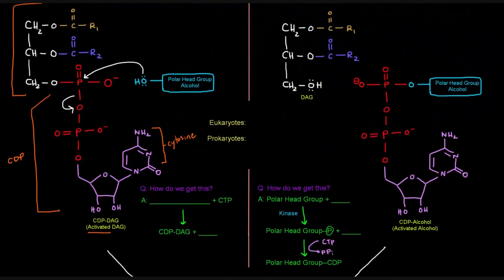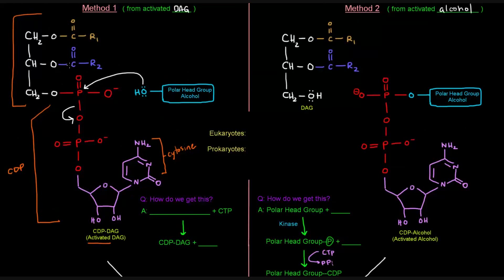Now you might be wondering how we even got the CDP-DAG — how we activated this diacylglycerol. We started with phosphatidate and invested a CTP. Phosphatidate has one phosphate and CTP has three, so that's four phosphates to start. We get CDP-DAG with two phosphates, and the other two came off as pyrophosphate. We'll see the details in the following videos. Essentially, we started from the activated diacylglycerol and the alcohol acted as the nucleophile.